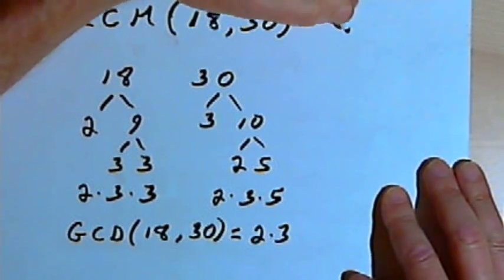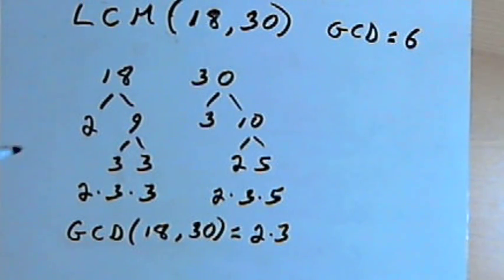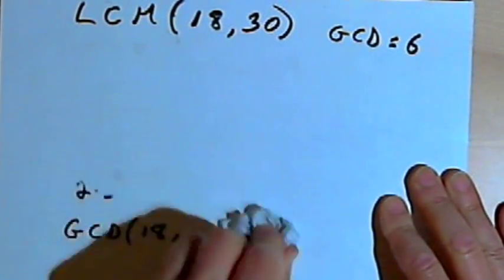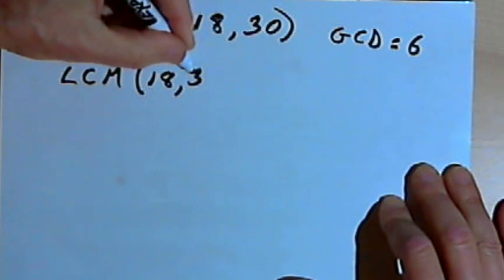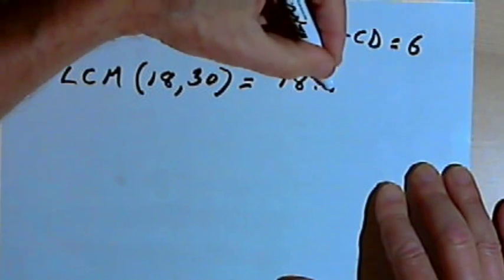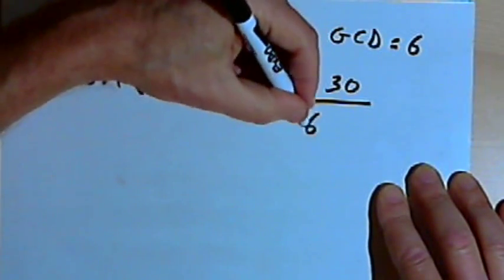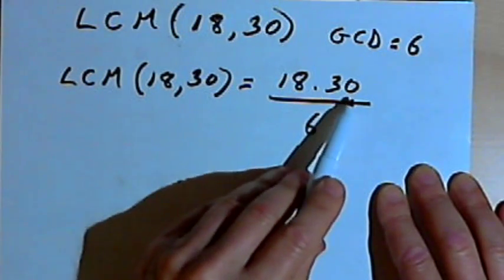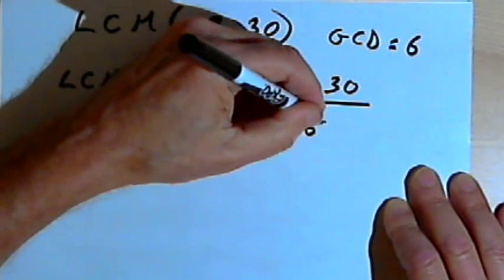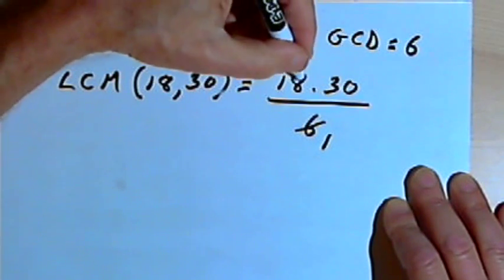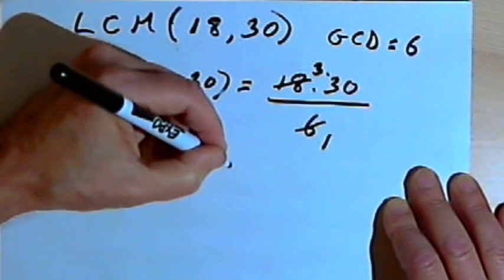Now I'm going to use my rule. The GCD equals 6. The LCM of 18 and 30 is going to equal the product of 18 and 30 — so that's 18 times 30 — divided by the greatest common divisor of 18 and 30, which was 6. So I've got 18 times 30 divided by 6. I can divide both the denominator and numerator by 6: the denominator becomes 1, and 18 divided by 6 gives 3. That means my least common multiple of 18 and 30 is 3 times 30, which is 90.